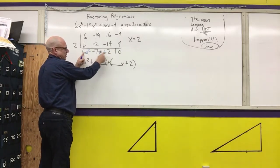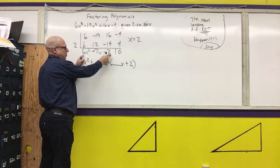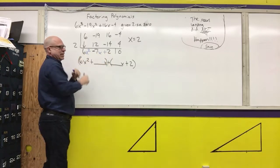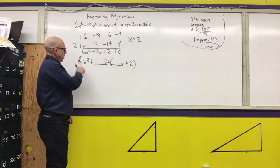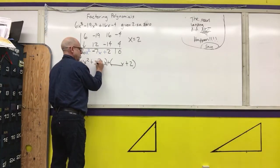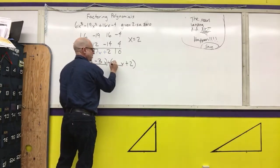I'm going to multiply the first term times the last. First coefficient times the last gives me 12. I need two numbers that multiply to 12 that add to negative 7, and that is negative 3 and negative 4. I'm going to put the negative 3 with the 6 and the negative 4 with the 2.